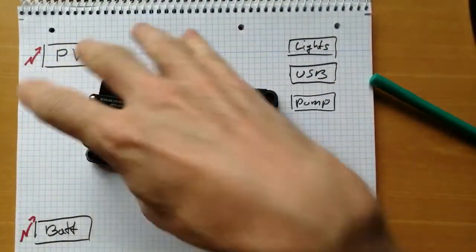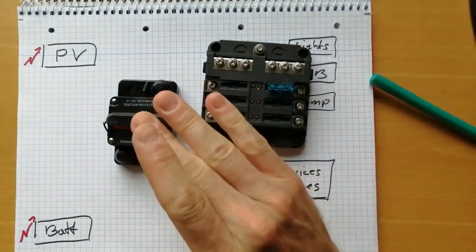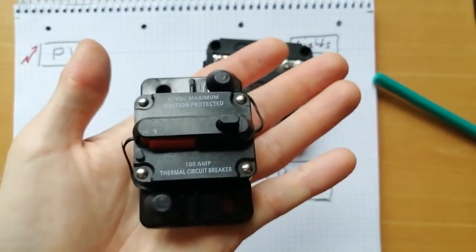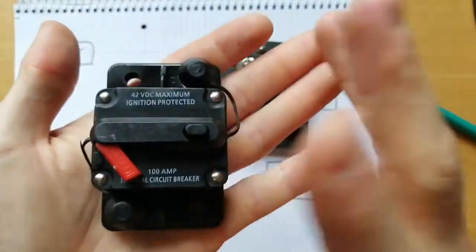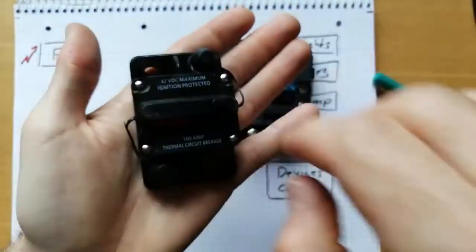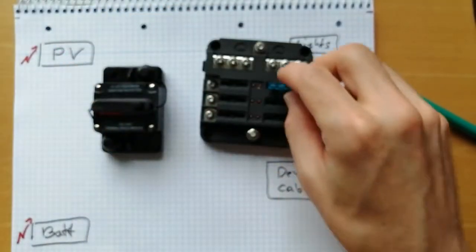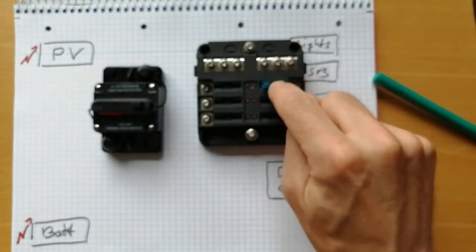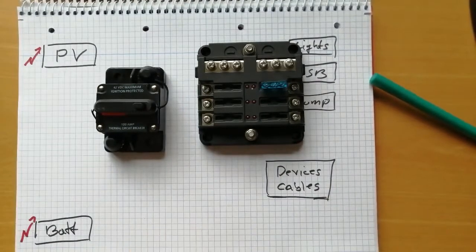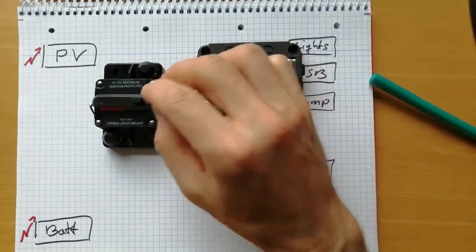You can also use something like that, breakers. That is a fuse that you can reuse. So you can push the button and then it's off and then you can put it back again and it works again. So you don't need new fuses like here. You can just reuse this one and push it back if everything is fixed after you've got a problem.